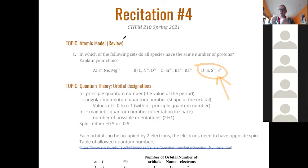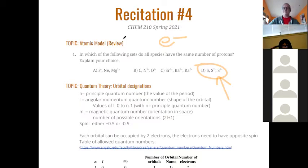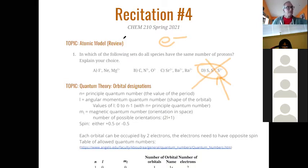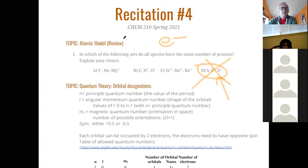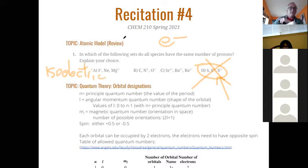Why do we put all these elements in group two? Because they all look like this — they all have two electrons in their outermost S subshell. Beryllium has 1s2, 2s2 — it gets rid of the two 2s electrons and becomes beryllium 2+. Calcium is the same with 4s2, strontium with 5s2, and barium with 6s2. That's why they all react so similarly — they all have two electrons in their outermost shell.